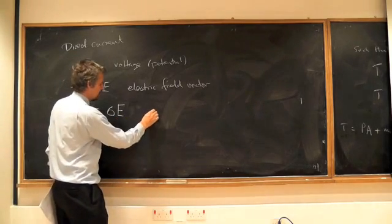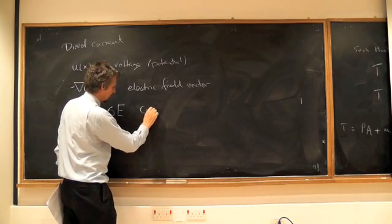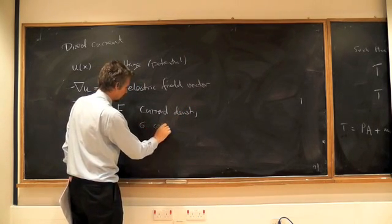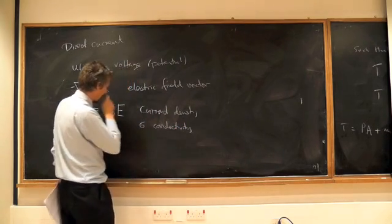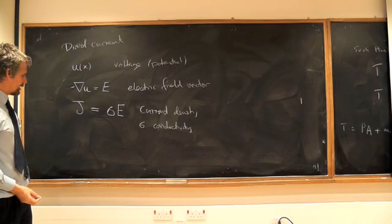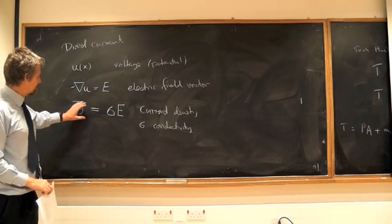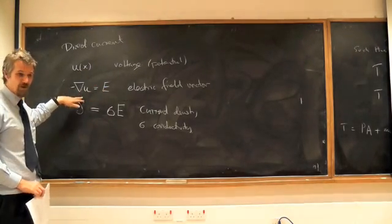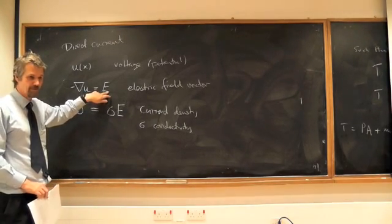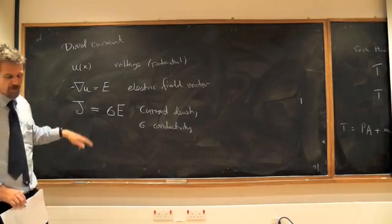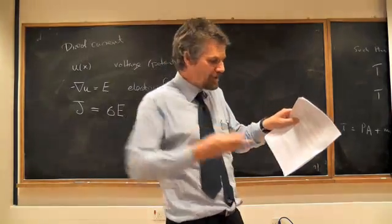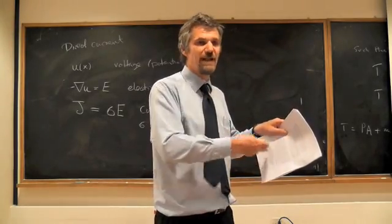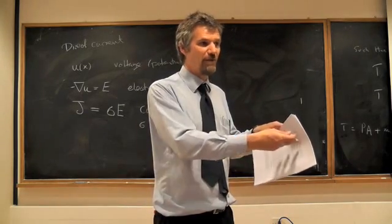This says sigma is the conductivity, and this is the current density. Let me put this into units. The electric field is actually in volts per meter. u is a voltage in volts. A gradient is a derivative, so it's in per meter—it's in volts per meter. This current is a current density. You measure current in amps. If you put a certain surface in and you measure how much current flows through that, then it's a certain current over an area. To get the current, you integrate current density over area.